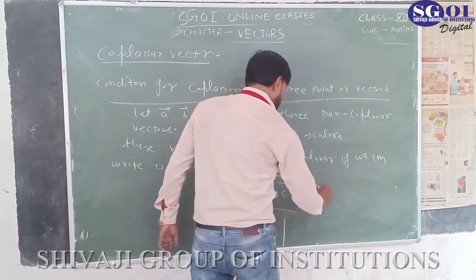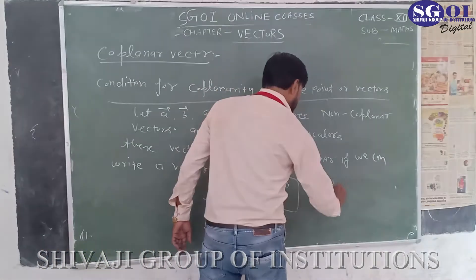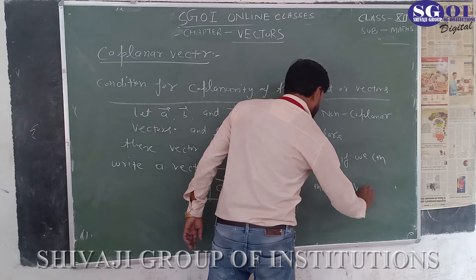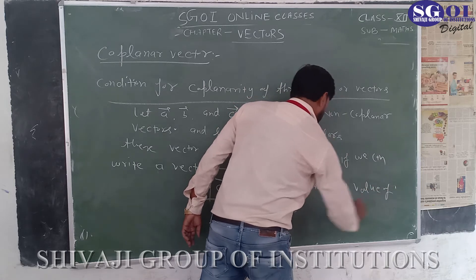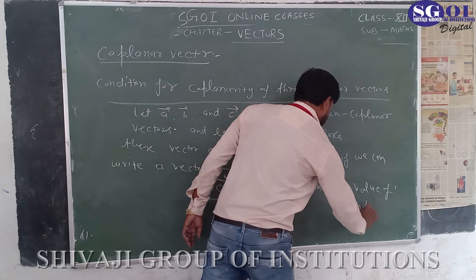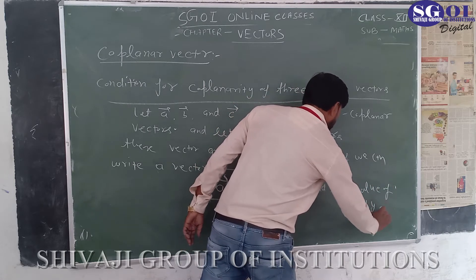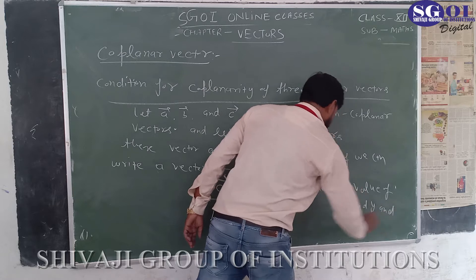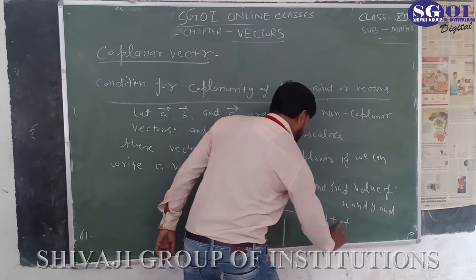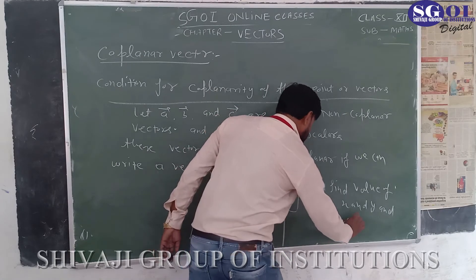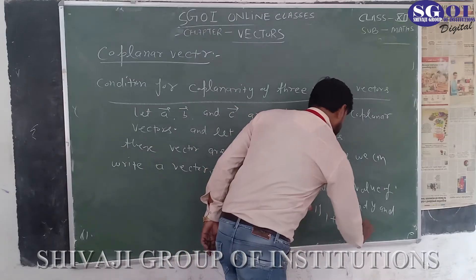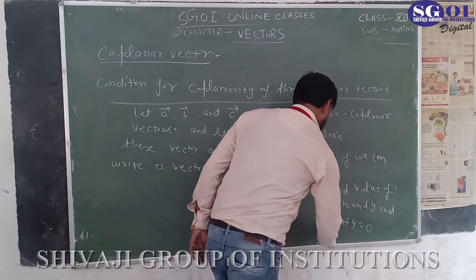We need to find the values of X and Y. If 1 plus lambda plus 1 plus Y is equal to zero, then the vectors are co-planar.